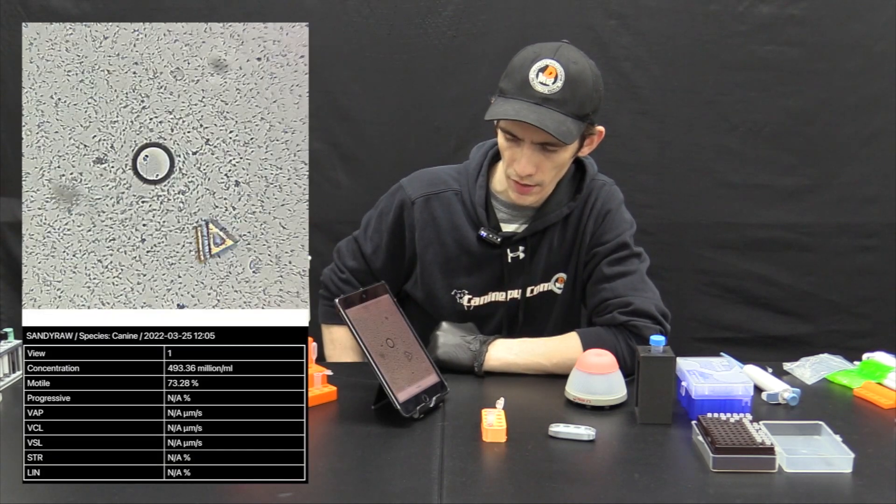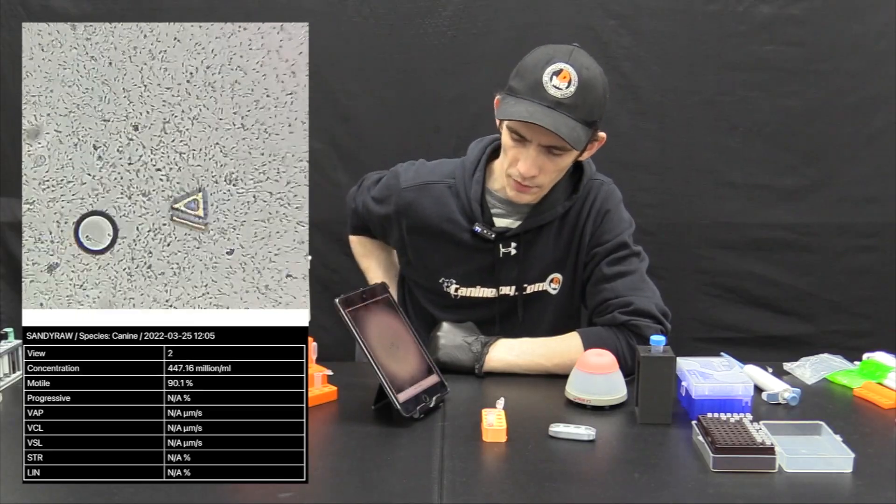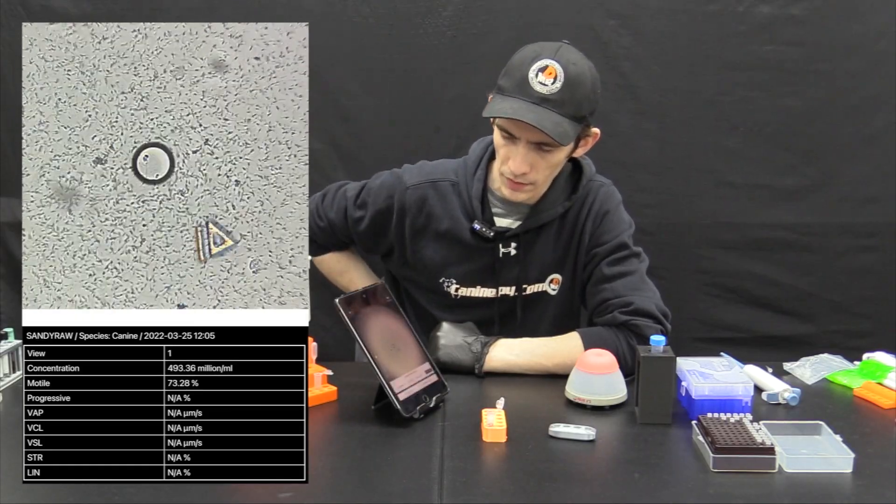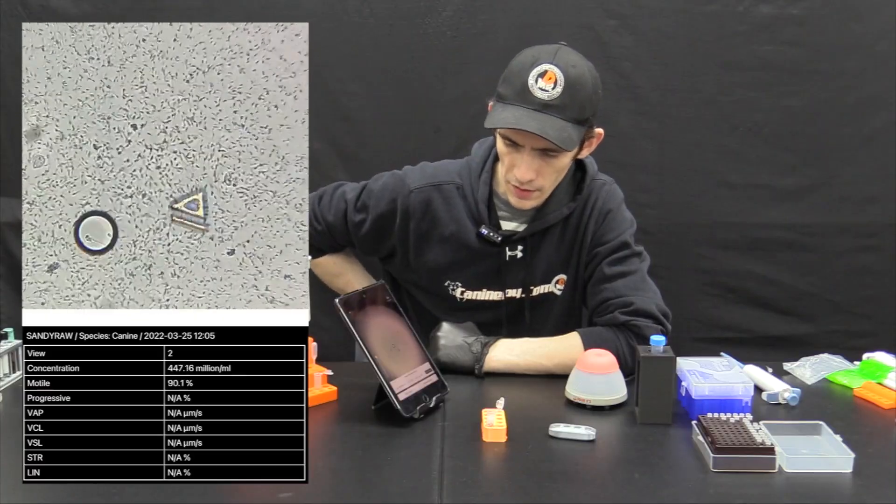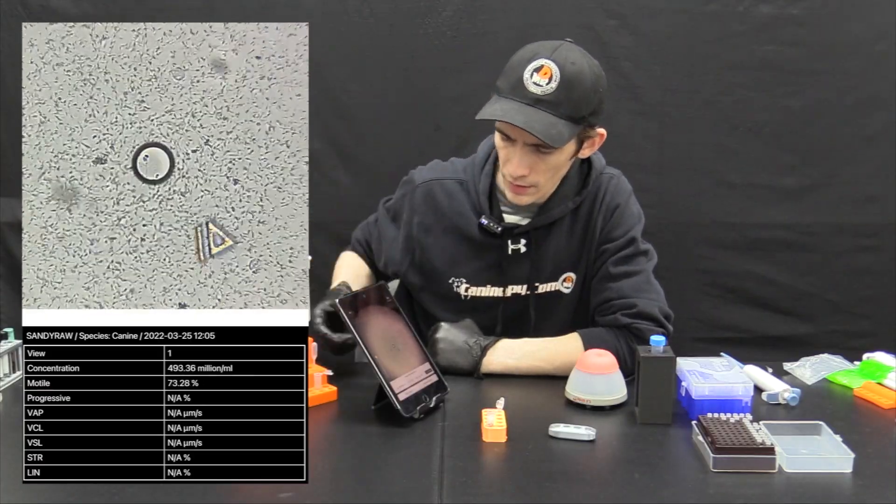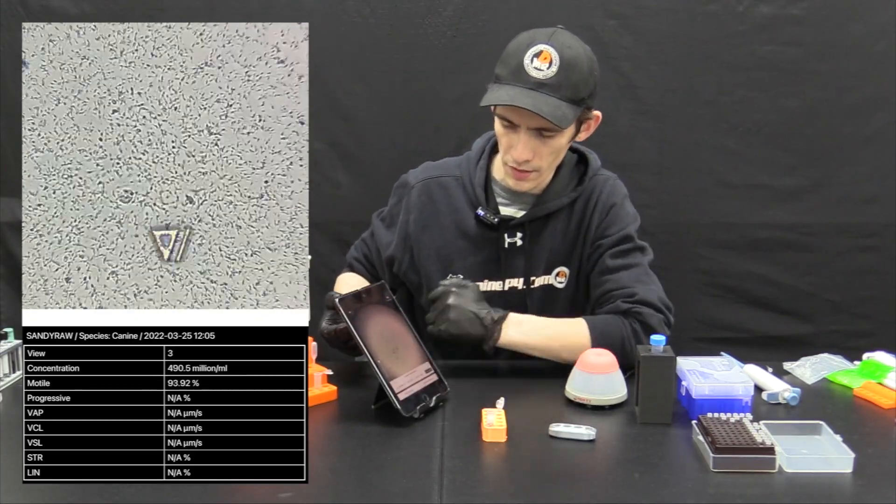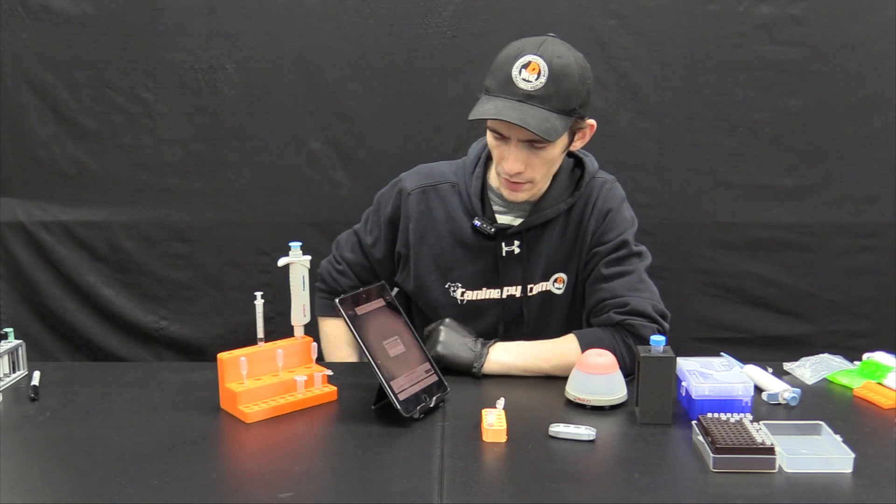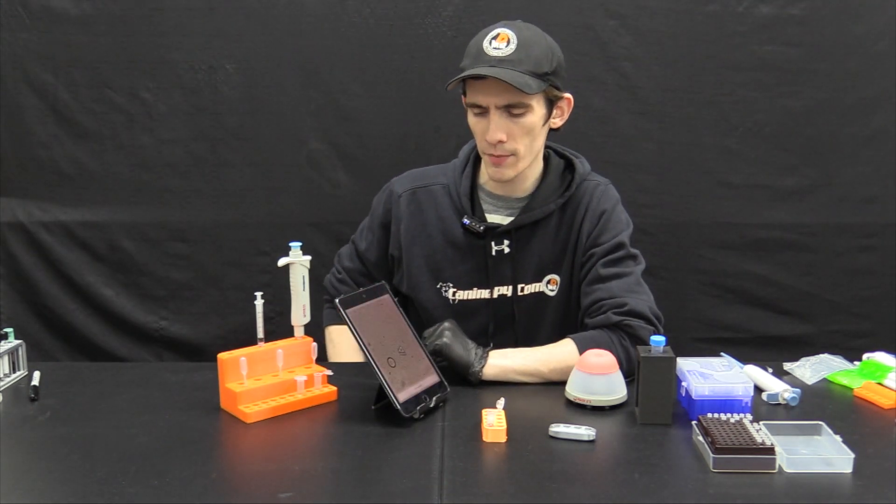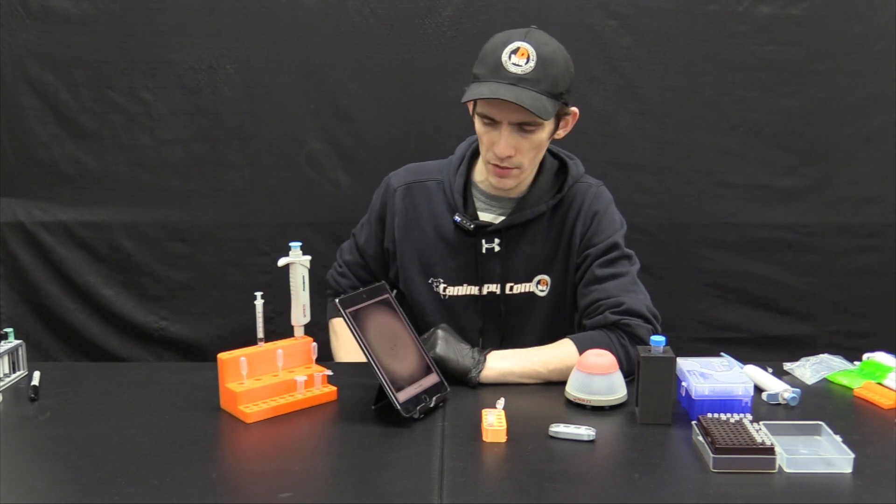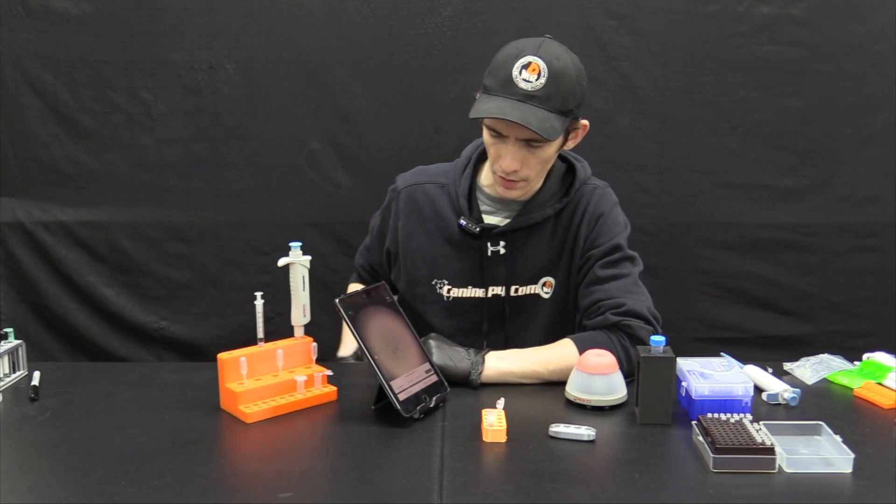So first, and you can kind of see here just how crowded these sperm cells are. Now the amount of crowding that they have may even affect their motility ratings. So here we see in this result, and we're going to want to turn it so that the arrow faces 90 degrees each time and repeat the analysis, first making sure that we do the analysis four times from different angles to get the best average. But we can see here that we have a very high concentration in this raw sample.